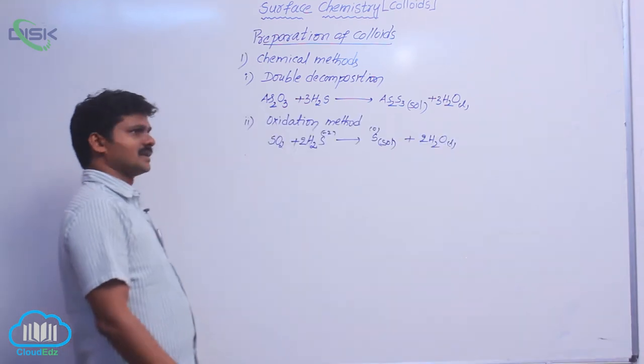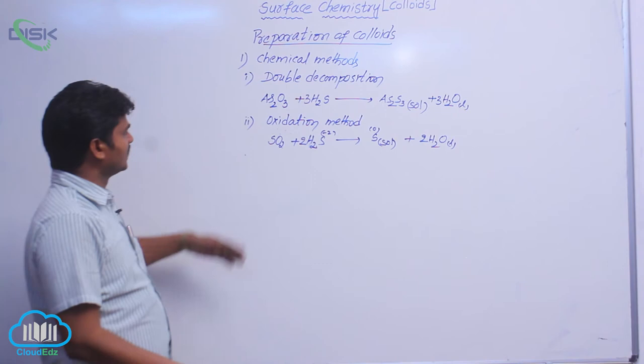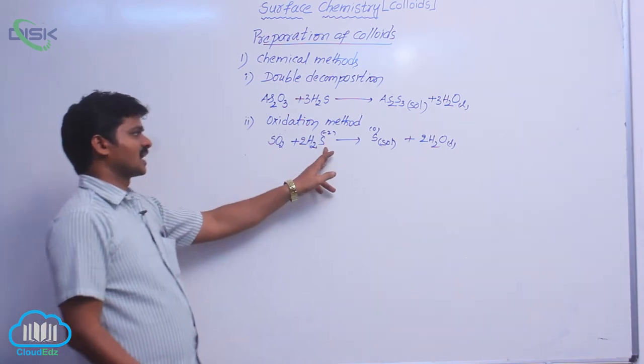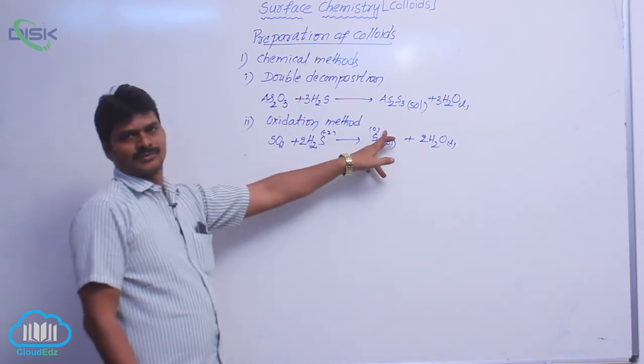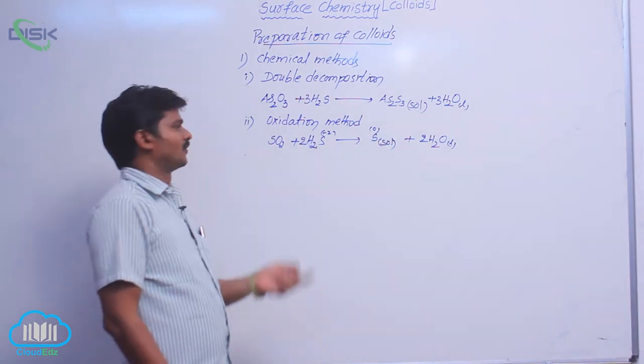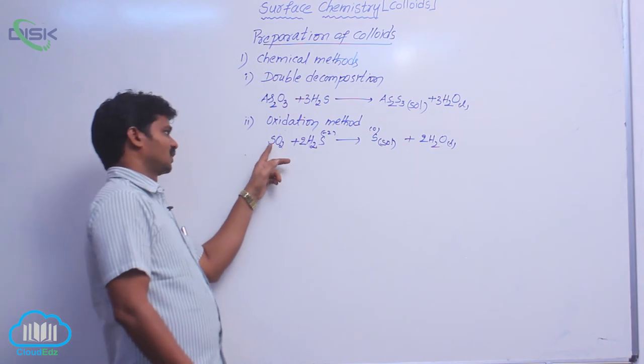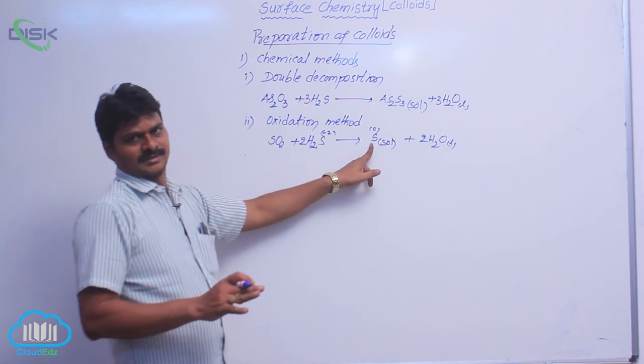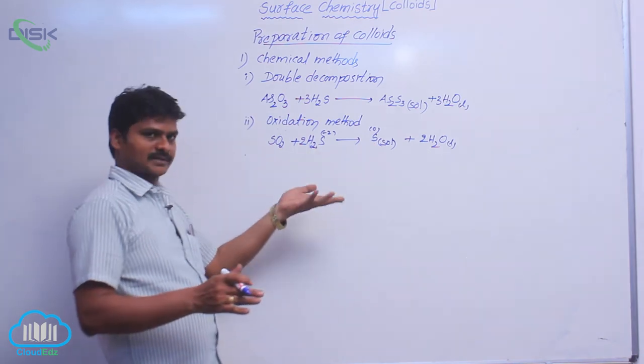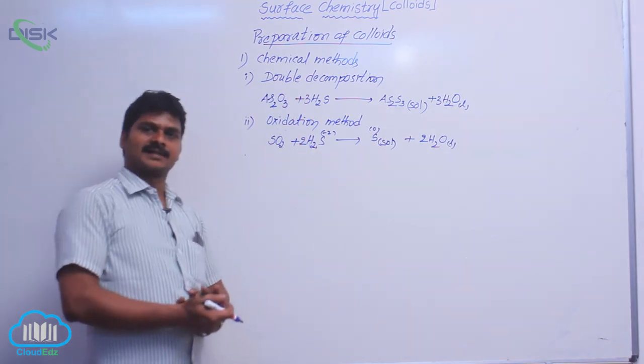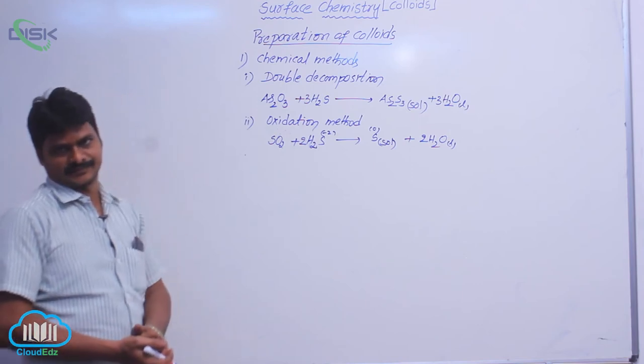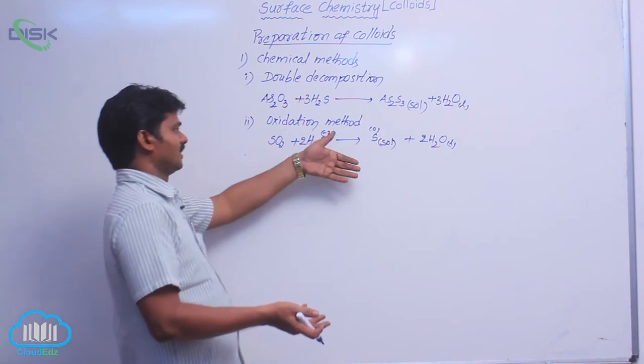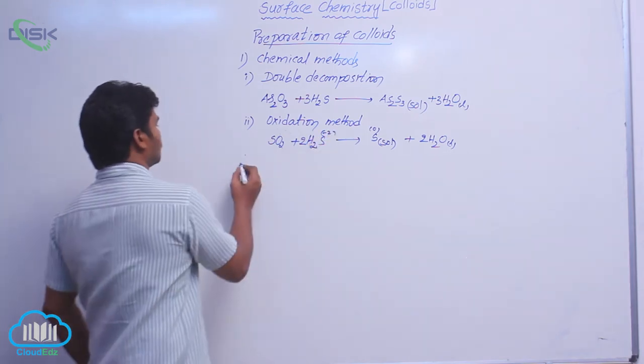Second one: oxidation method. In this oxidation method, oxidation number of sulfur from minus 2 to 0, that means it is oxidized. Other element from SO2, sulfur has plus 4 that became 0, that means that is reduced. It is of course a redox reaction. A redox reaction contains both oxidation and reduction. But we have considered this example in oxidation method.